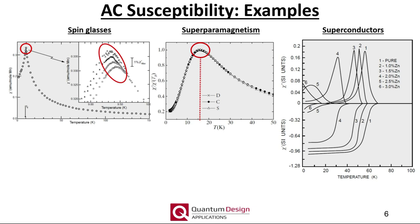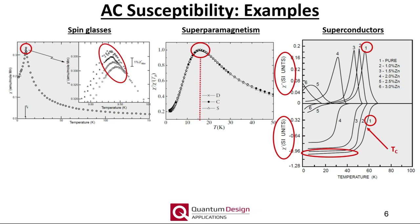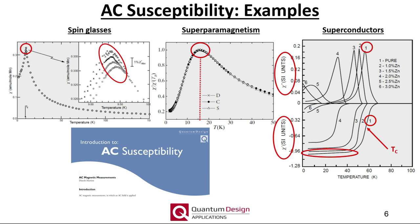Superconducting samples show clear features in an AC susceptibility measurement. Focusing on curve number one, we see that the chi prime or in-phase response as a function of temperature clearly indicates the expected diamagnetic response of the sample when in the superconducting state. As the temperature is increased, the superconducting transition temperature is clearly observed, and the peak in chi double prime or out-of-phase response can be used to study damping mechanisms such as superconducting vortex motion. More details can be found in the aforementioned application note.